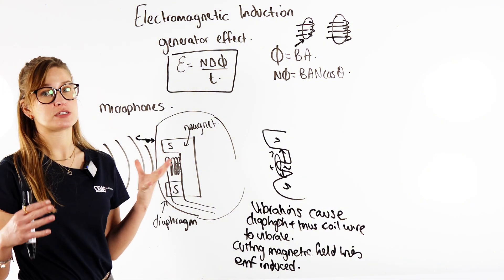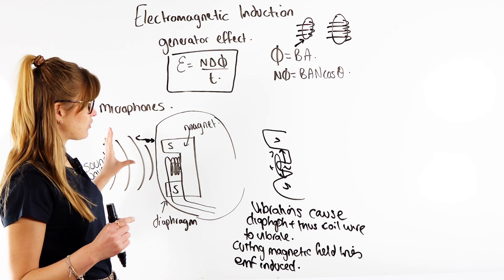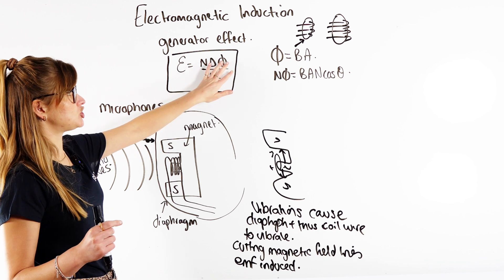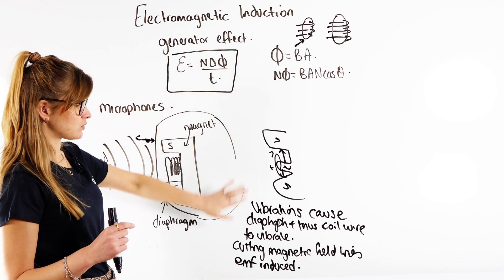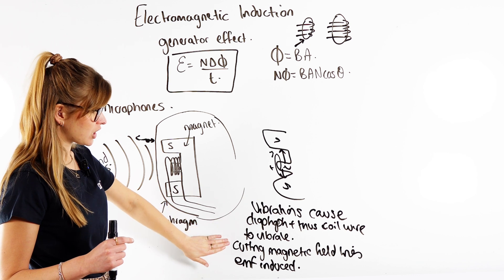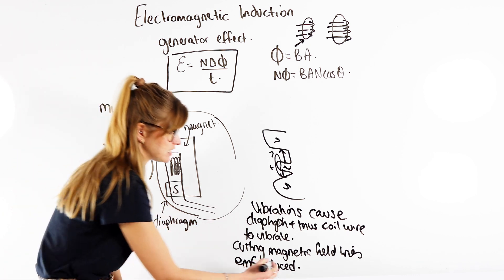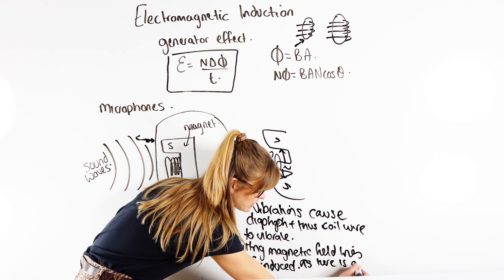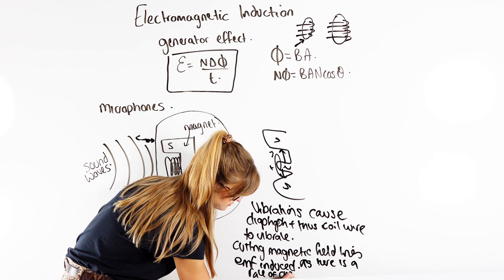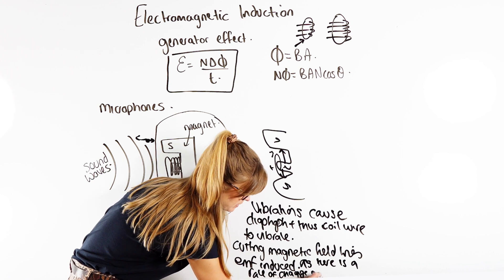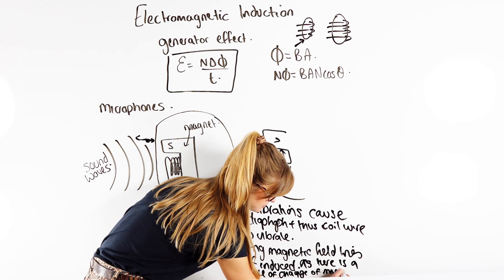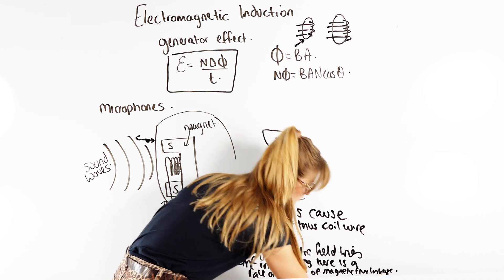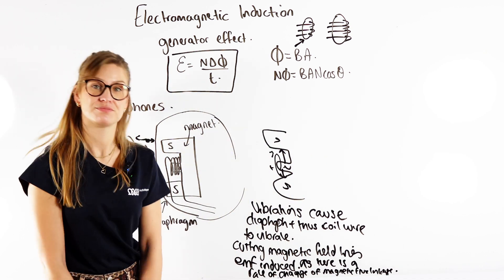It's just different ways that you can see this principle applied, and it's always the same steps. You always want to think about whether you have a moving coil or a moving magnet, or whether you have a rate of change of magnetic flux linkage. Vibrations cause the diaphragm and the coil of wire to vibrate, cutting the magnetic field lines — EMF induced — because there is a rate of change of magnetic flux linkage.